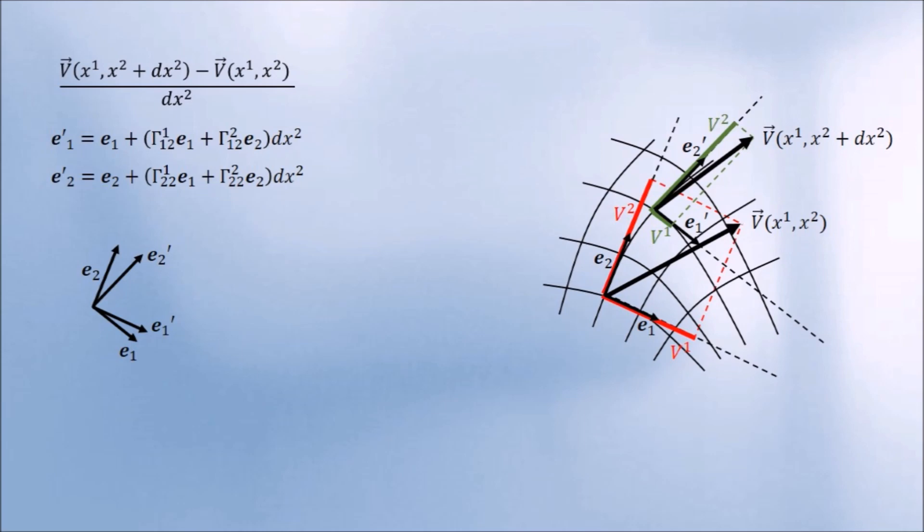The gamma coefficients are called connections, for obvious reasons, but we also know them as Christoffel symbols. The lower left index refers to the primed bases of the same index. The lower right index tells us that the primed bases result from shifting the unprimed bases by the coordinate distance dx2 along the direction given by the index. The top index labels the connection between the primed bases and the specific unprimed basis vector. Plugging in these relations, we obtain the covariant derivative of the vector component.